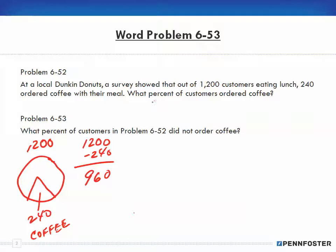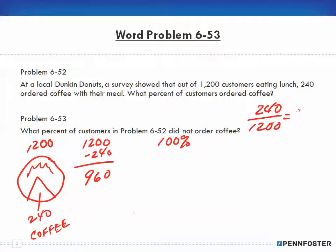Problem 6-52 asks what percentage of customers ordered coffee. Remember, there's a relationship between amounts and their percentage. The 1200 customers represent 100% of customers, so the 960 who did not order coffee and the 240 who did each have a percentage. To find the percentage who had coffee, we take 240 divided by 1200, which gives us 0.2. Moving the decimal two places to the right converts it to 20% — so 240 represents 20% of 1200 customers who had coffee.